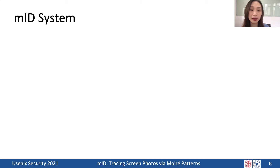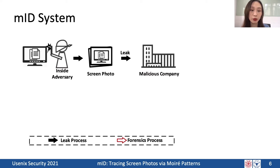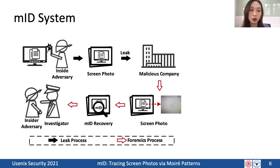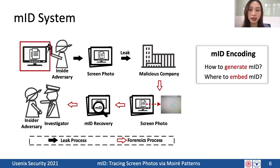MID refers to moiré pattern-based user identity and works as follows. Once an adversary logs into a computer or application with his account, MID will slightly modify the displayed content based on his identity. When the adversary takes pictures of the screen, the modification creates moiré patterns in the photos. Once we obtain the photos, we decode the embedded moiré patterns to recover the embedded ID. The MID system mainly consists of two parts: encoding and decoding.